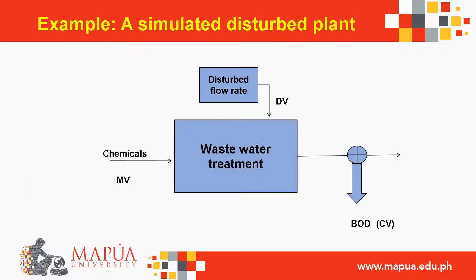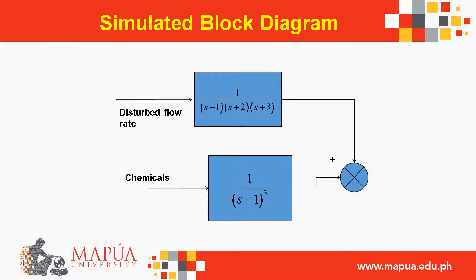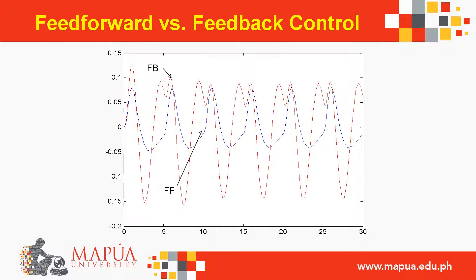This is an example of a simulated disturbed plant and the simulated block diagram. Here is a comparison of feedforward and feedback control.